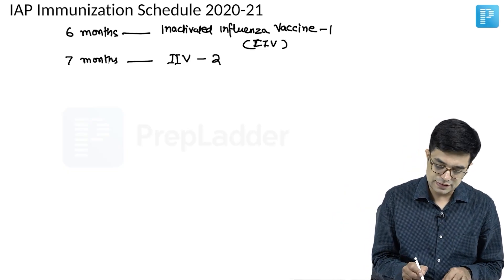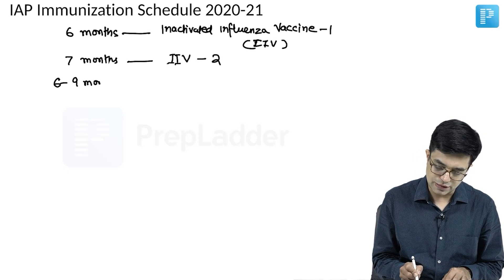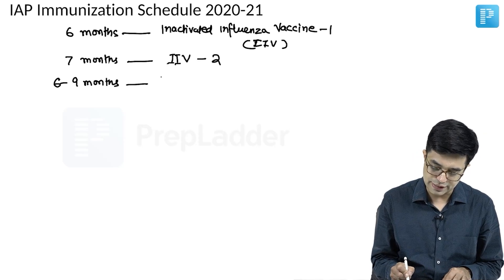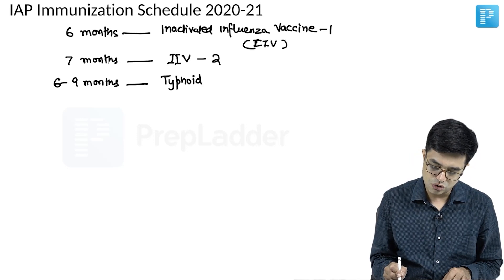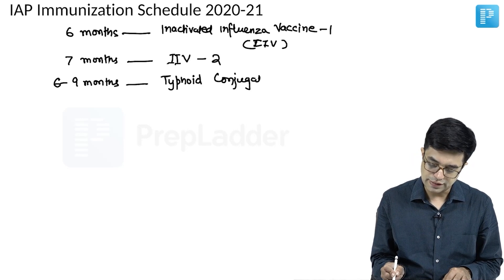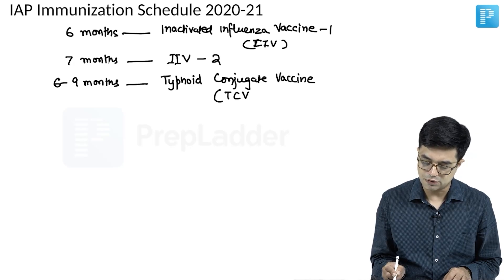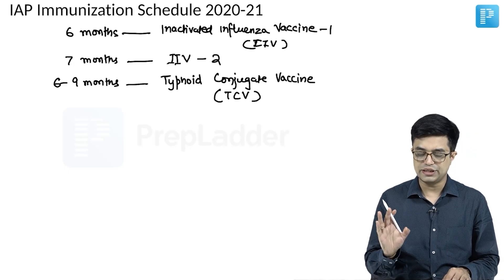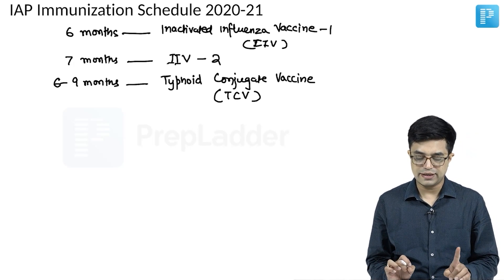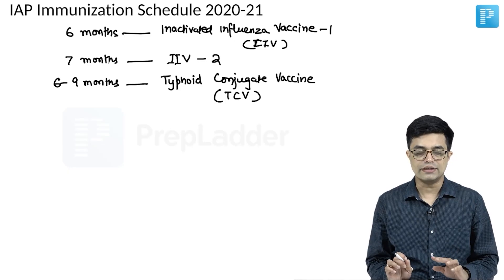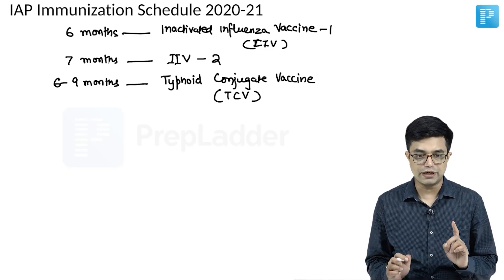After that, only high-risk group children need influenza vaccine. Then we have 6 to 9 months, during which you give the typhoid conjugate vaccine (TCV) as a single dose, which provides lifelong protection — no booster needed. So TCV is given between 6 to 9 months.